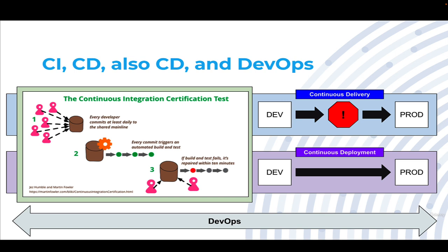The next step has to do with continuous delivery. That's the process of using deployment automation to take that work from dev and get it into production, noting that at some point in that process, there is some type of manual intervention — somebody saying yes, this is okay to go, I verified it, press the button and go.